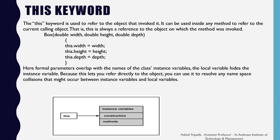The this keyword is used to refer to the object that invoked it. It can be used inside any method to refer to the current calling object. That is, this is always a reference to the object on which the method was invoked.